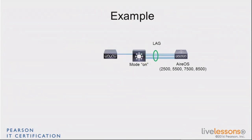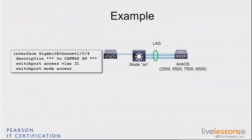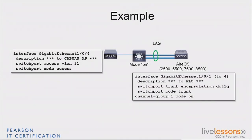Let's look at a configuration example. You are using an Aeros controller with LAG to a switch, and on that switch you have an access point connected. For the access point side, you expect that port to be in access mode in whatever VLAN the access point should be in. On the controller side, you expect the mode to be trunk, and if you use LAG, you group ports together into a channel group with the mode set to 'on' on the switch side.